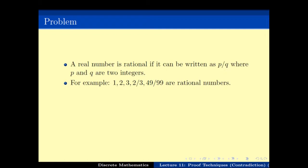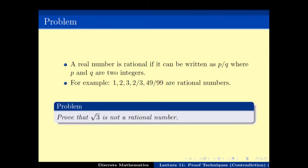For today's video lecture, we will be working with numbers. A real number is rational if it can be written as the ratio of two integers, p/q. For example, 1, 2, 3 can be written as 1/1, 2/1, 3/1, and 2/3, 49/99, and so on. The question is: can you prove that √3 is not a rational number? Namely, √3 cannot be written as p/q, a ratio of two integers.